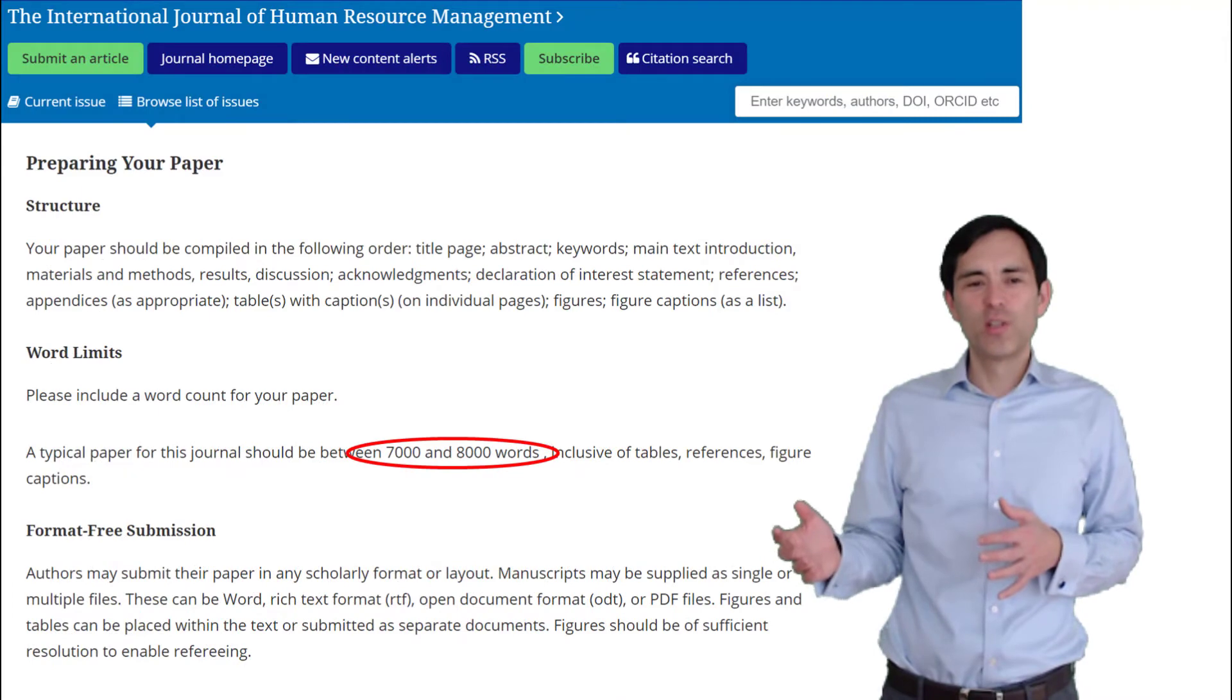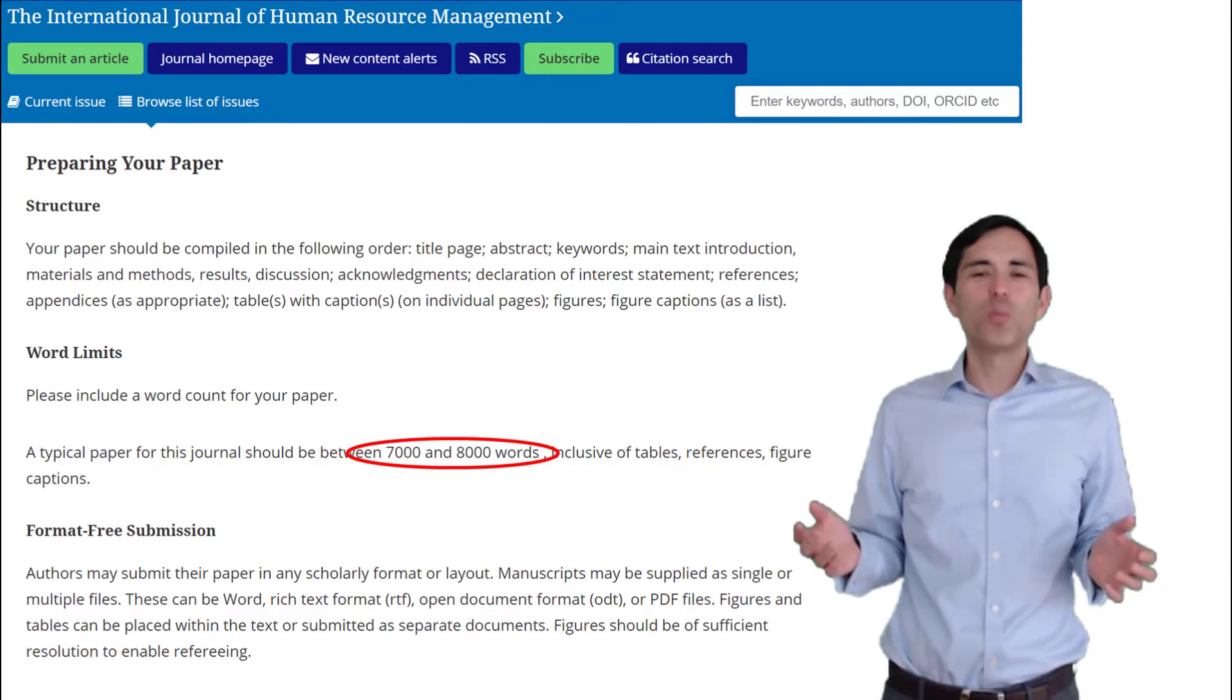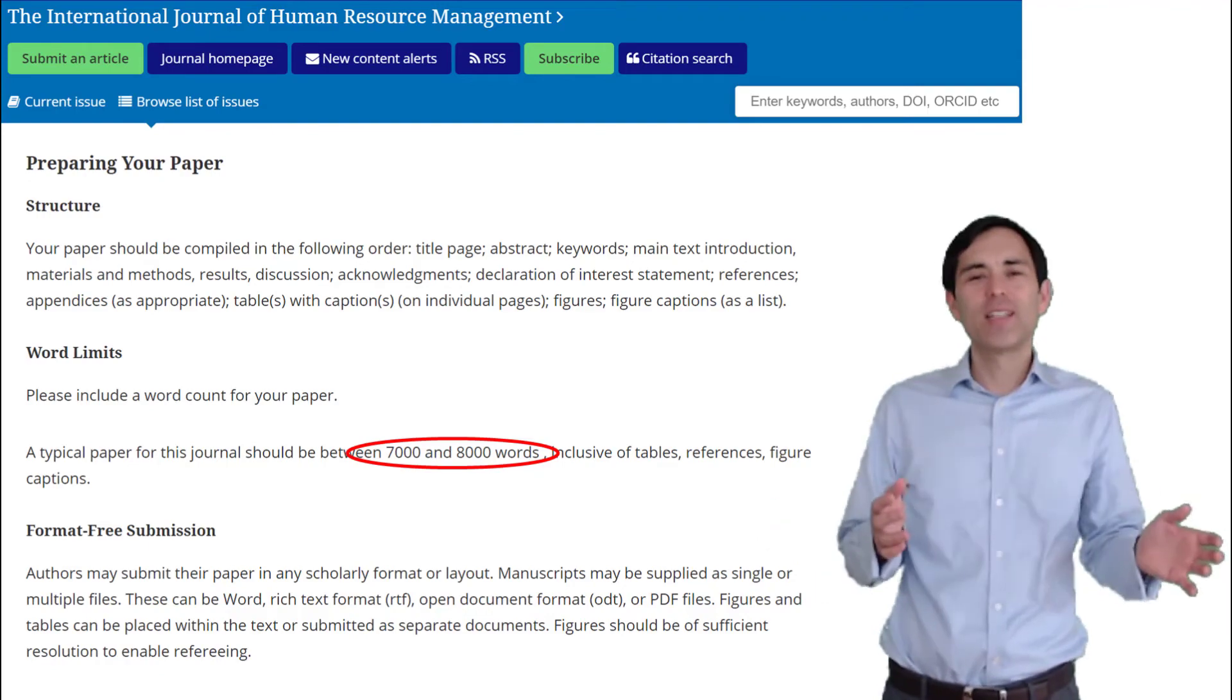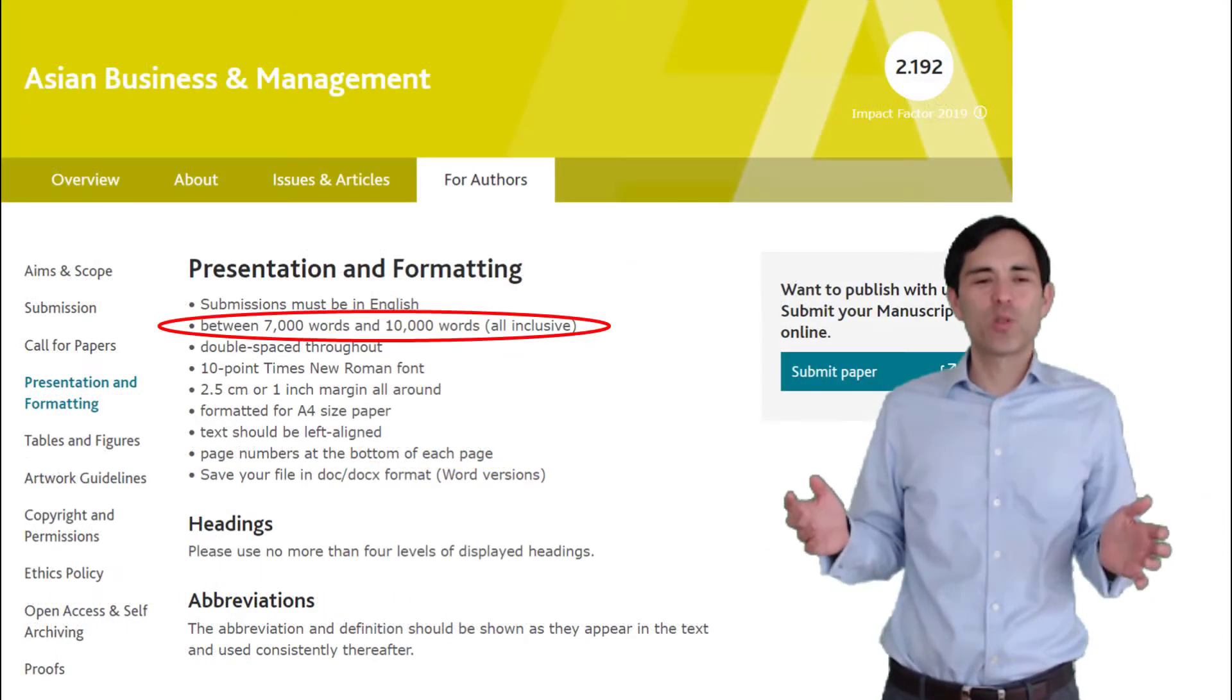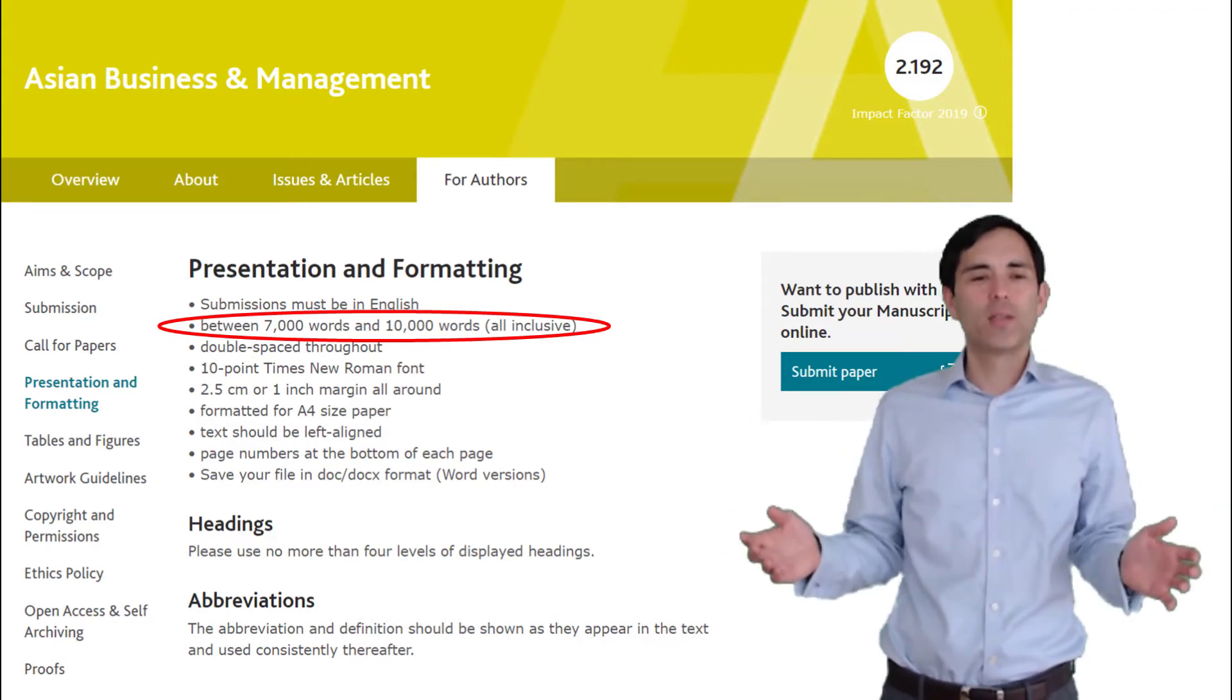Let us begin with the Journal of International Business Studies. Here you can see the homepage. The Journal of International Business Studies recommends 10,000 words for a regular paper and 7,000 words for a somewhat narrow topic. Then let us look at another journal, International Journal of Human Resource Management. Here you can read, a paper should be between 7 and 8,000 words. Let us look at yet another journal, Asian Business Management. Here you can read, 7,000 to 10,000 words is what they expect.